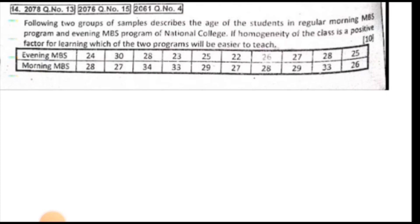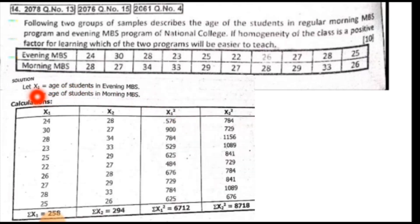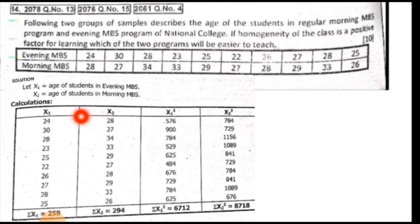When determining which is easier to teach, we let x1 equal the age of students in evening MBS and x2 equal the age of students in morning MBS. We will calculate the mean and standard deviation for both x1 and x2.